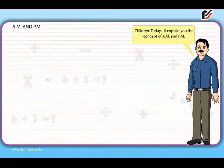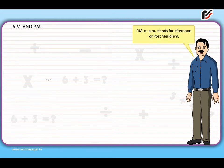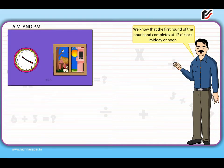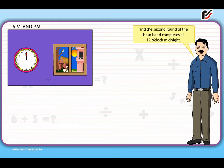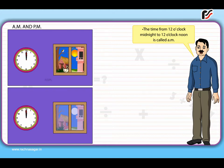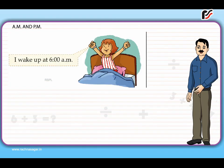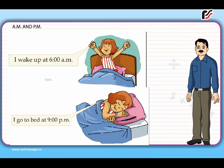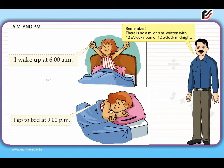AM and PM: Today I will explain the concept of AM and PM. AM stands for ante-meridiem, meaning before noon. PM stands for post-meridiem, meaning afternoon. The first round of the hour hand completes at 12 o'clock midday or noon, and the second round completes at 12 o'clock midnight. The time from 12 o'clock midnight to 12 o'clock noon is called AM, and from 12 o'clock noon to midnight is called PM. For example, I wake up at 6 AM and go to bed at 9 PM. Remember: there is no AM or PM written with 12 o'clock noon or midnight, and no o'clock written with AM or PM.